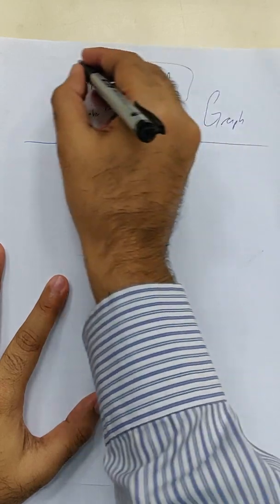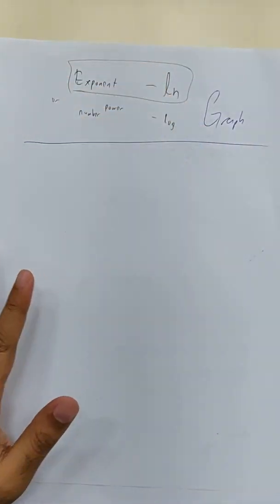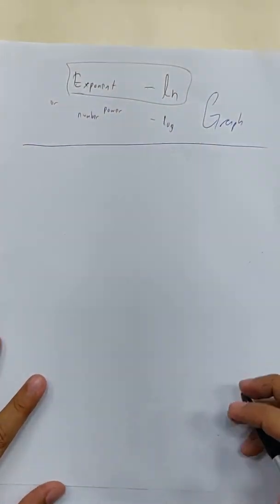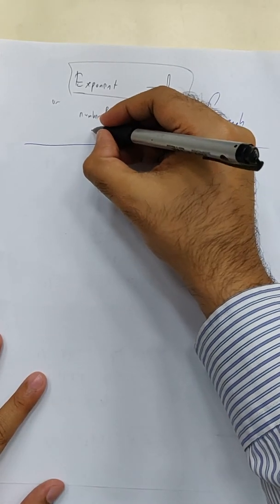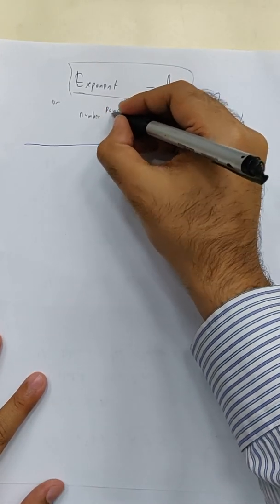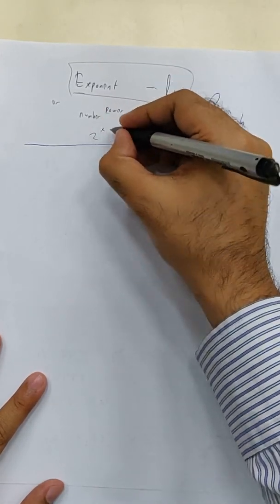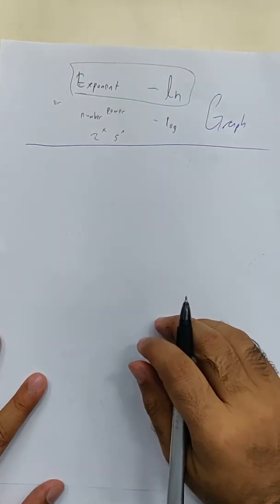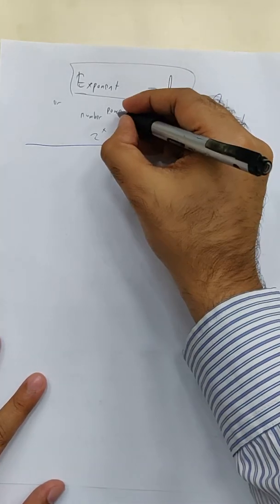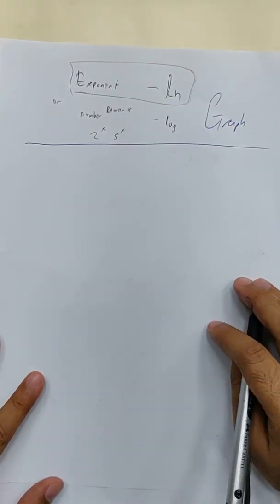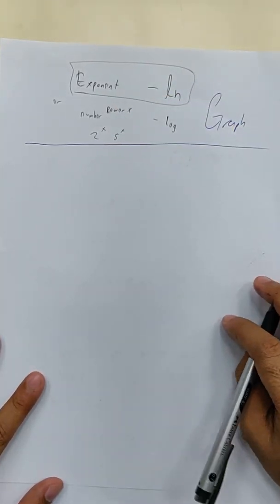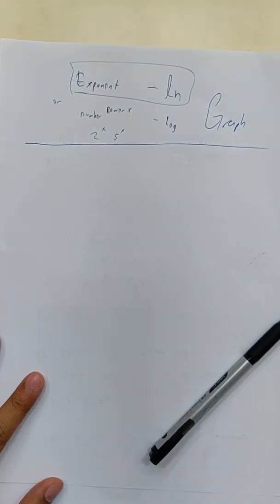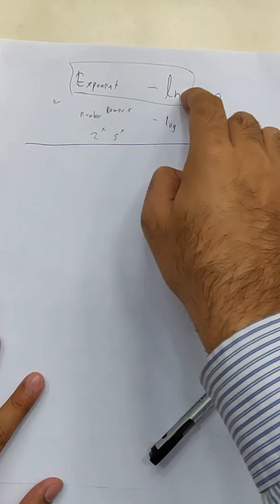Okay, so now let's go to one of the hardest parts, which is actually the exponent and ln, but it can also be applied for number power and log. What do I mean by number power? Something like 2x or 5x. But normally in exams, they will just ask you exponent and ln.